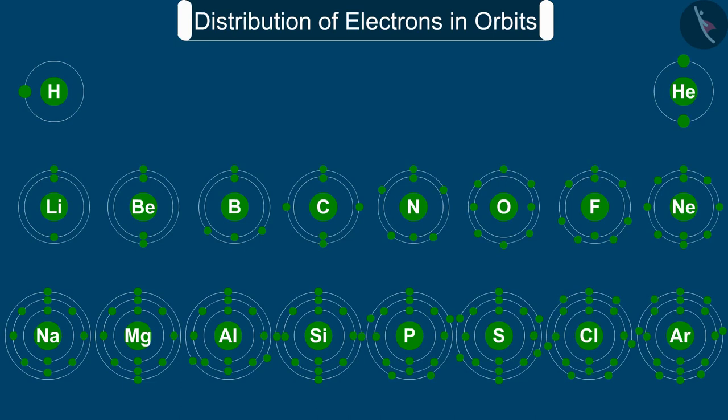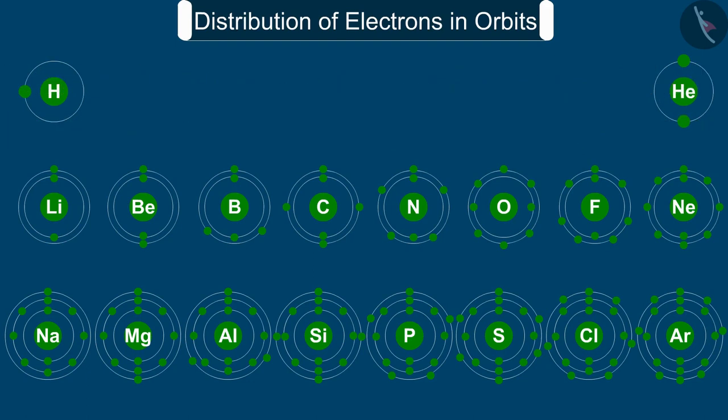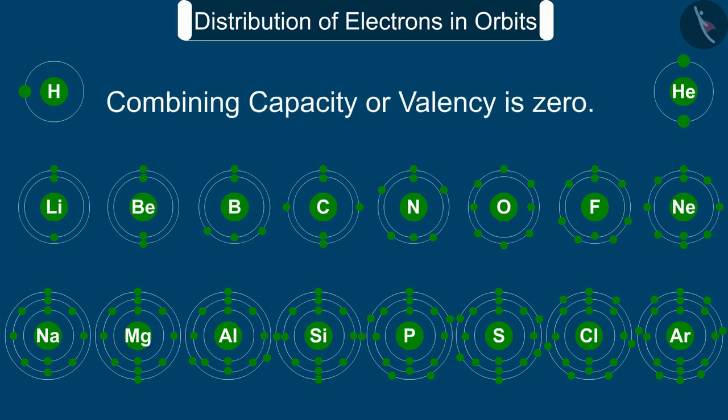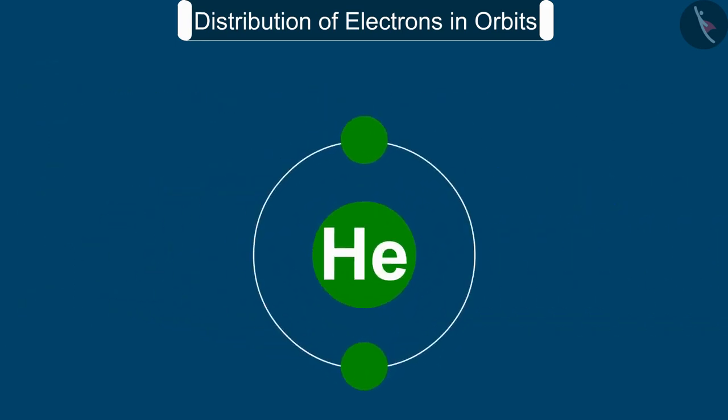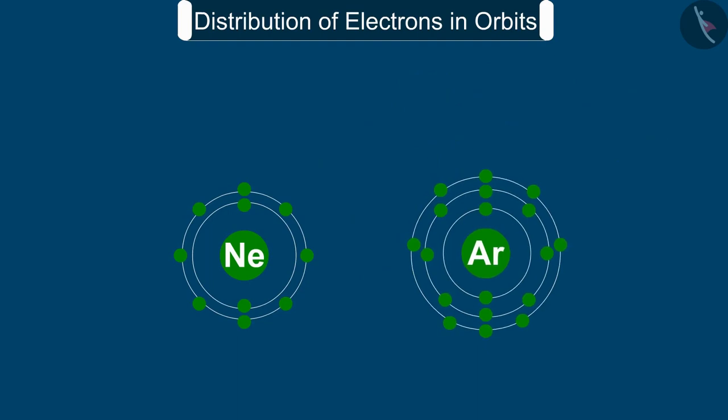It was observed that the atoms of elements having a completely filled outermost shell show little chemical activity. In other words, their combining capacity or valency is zero. Of these inert elements, the helium atom has 2 electrons in its outermost shell and all other elements have atoms with 8 electrons in the outermost shell.